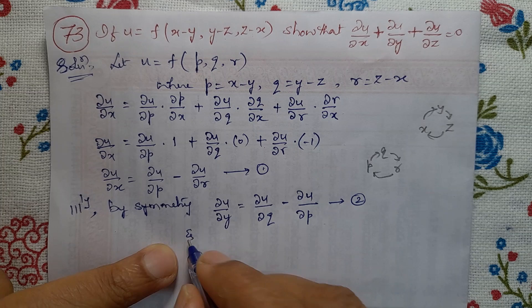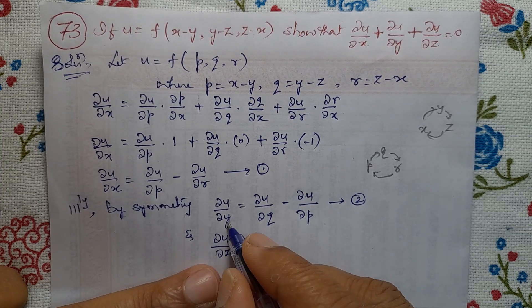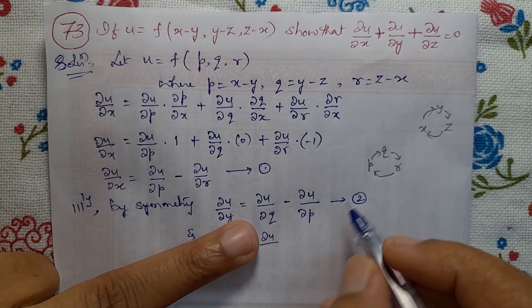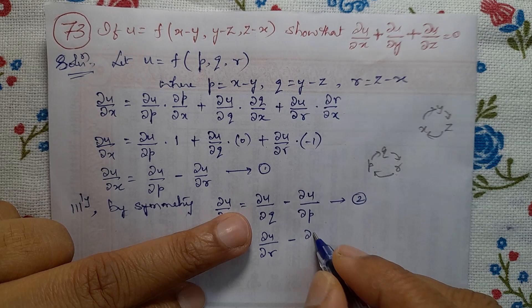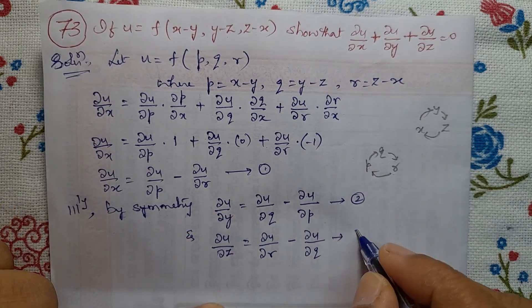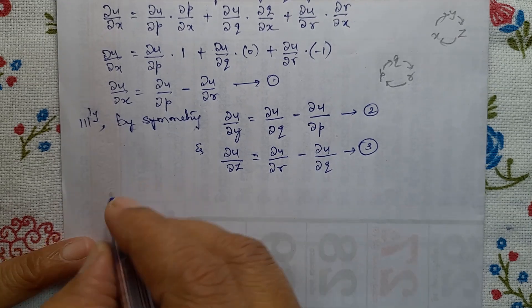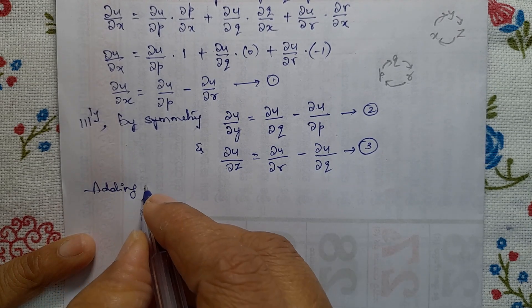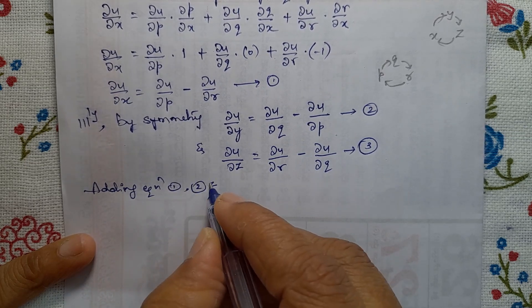Similarly, ∂u/∂z equals ∂u/∂r minus ∂u/∂q. Call this equation number 3. Adding equation numbers 1, 2, and 3: